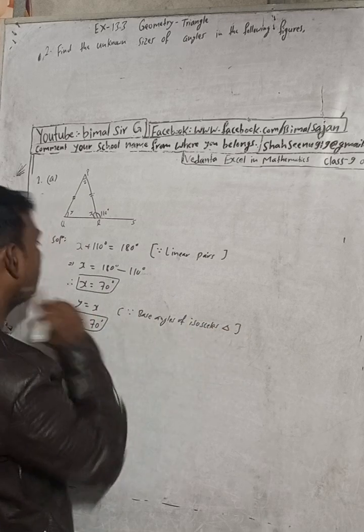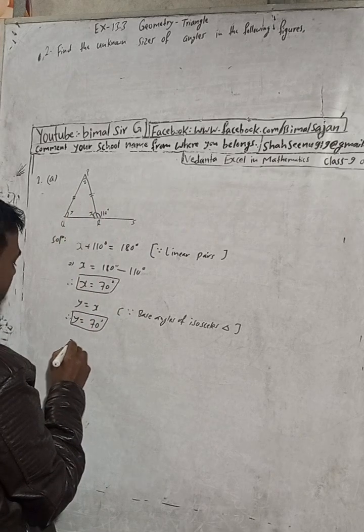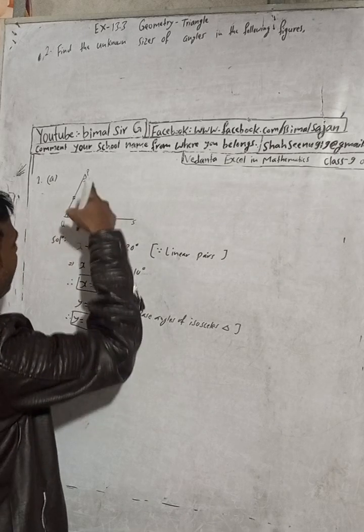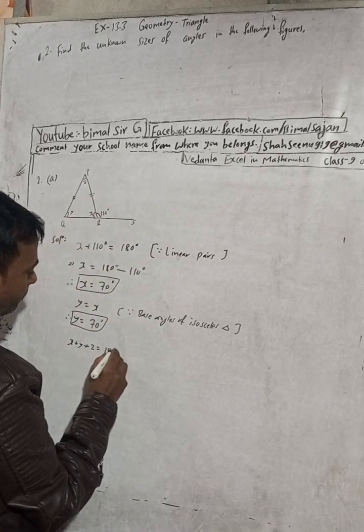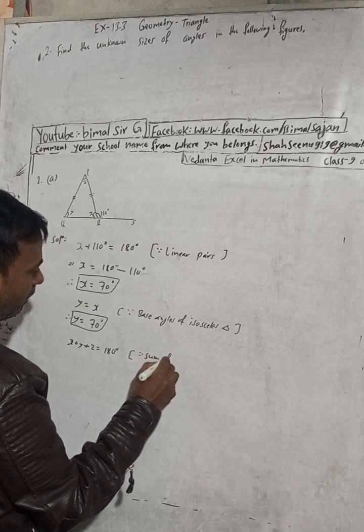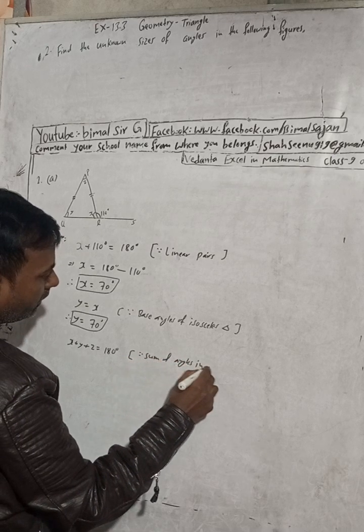Now z, you can write here x plus y plus z is equal to, in this triangle, 180 degrees. So we can write here sum of angles in a triangle is equal to 180 degrees.